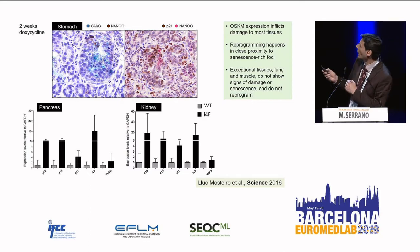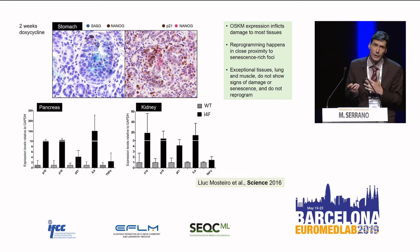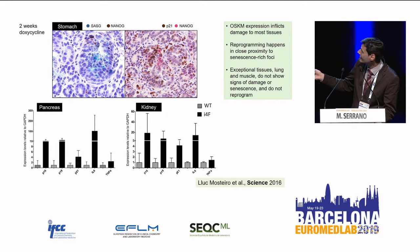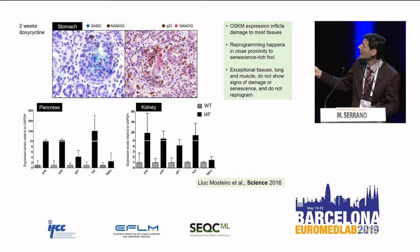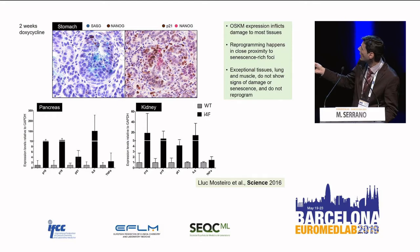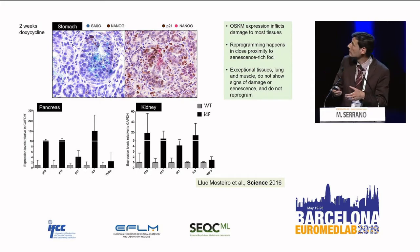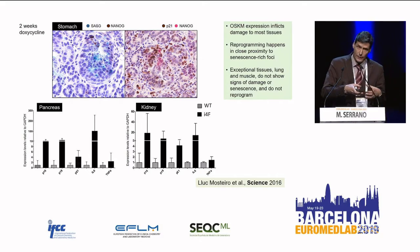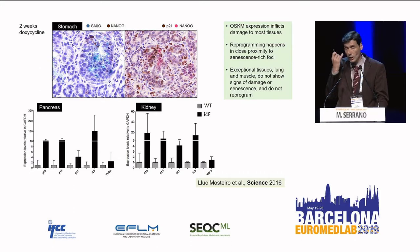When we stain for one of the most popular markers of senescence — senescence-associated beta-galactosidase — we observe that all the glands containing NANOG, where there is full reprogramming, all contain senescent cells in the neighborhood. Staining NANOG in pink and P21 as a surrogate marker of senescence in brown, you can see they are next to each other. Every time a gland is reprogramming, there is damage and senescence in neighboring glands — not in the same cell, but next to each other.